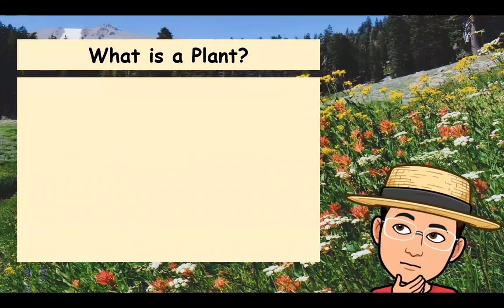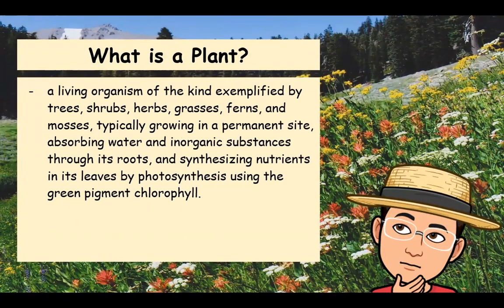So what is a plant? A plant is a living organism of the kind exemplified by trees, shrubs, herbs, grasses, ferns, and mosses, typically growing in a permanent site, absorbing water and inorganic substances through its roots and synthesizing nutrients in its leaves by photosynthesis using the green pigment chlorophyll.